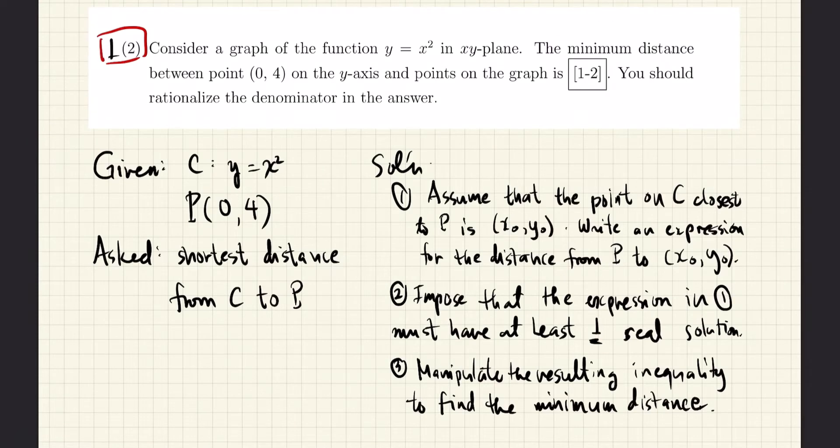We are given the curve y equals x squared, which is a parabola, and a point (0,4), which we shall call P. We are asked to find the shortest distance between P and the parabola y equals x squared.